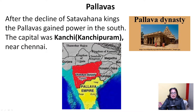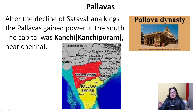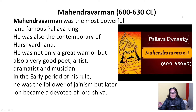After the decline of the Satavahanas, the Pallavas gained power in the south. After the Chalukyas came the Pallavas in the south. The Pallava capital was Kanchipuram, near Chennai - it was earlier known simply as Kanchi. The most important king of the Pallavas was Mahindra Varman.